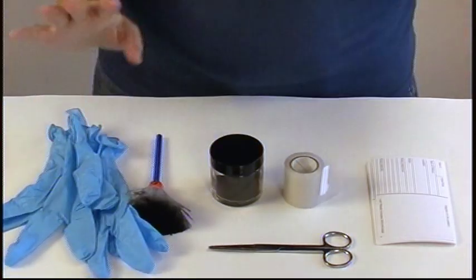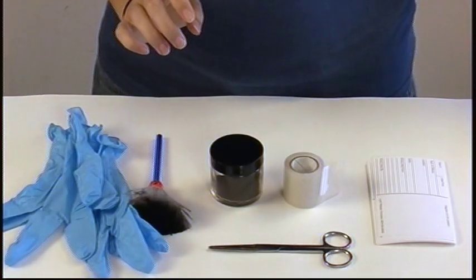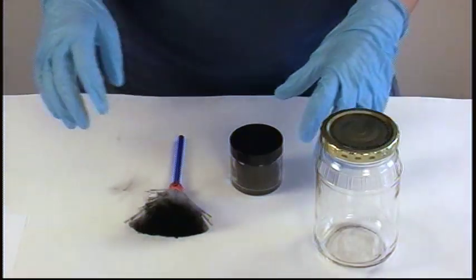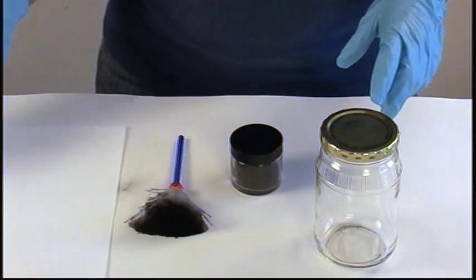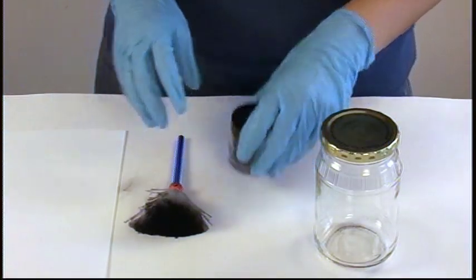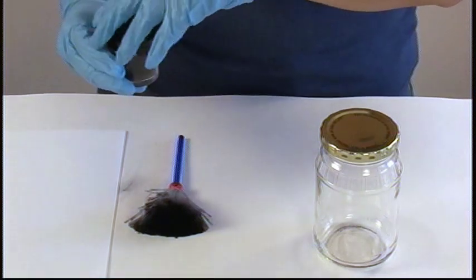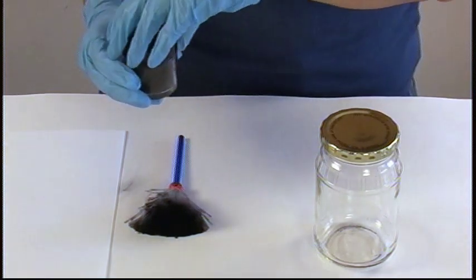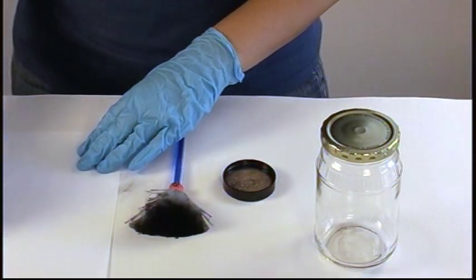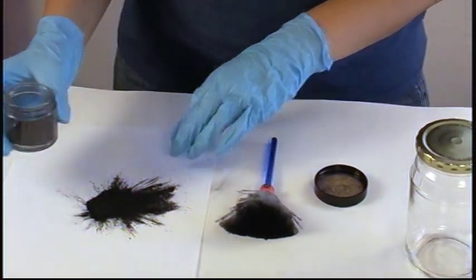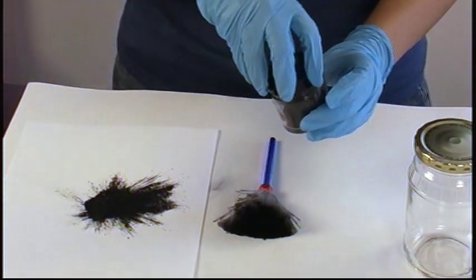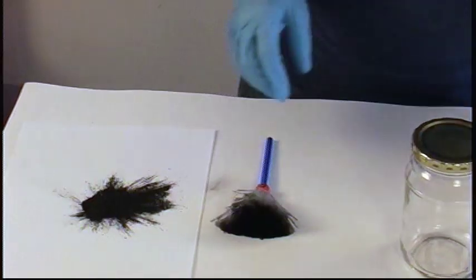Gloves are very important. We don't want to get our fingerprints mixed up with any of the ones that we're developing. So when working with black powder I like to use a spare sheet of clean white paper or lined paper, whatever you have. It makes it easier to not get too much black powder on your brush and it makes for easier cleanup. You want to be very careful because you can see it likes to fly out a little bit.